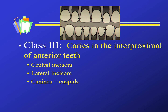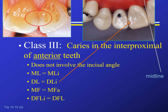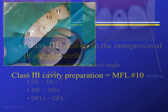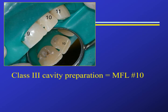Recall class two and class three are interproximal caries. If class two is posterior, then class three is anterior. Class three is anterior interproximal, but it does not involve the incisal angle. Typically, we refer to these with two surfaces such as the mesial lingual, distal lingual, mesiofacial, or even distofacial lingual if it is larger. Here is a clinical photo of a cavity preparation on the mesial lingual facial of number 10.